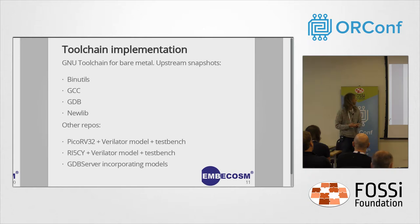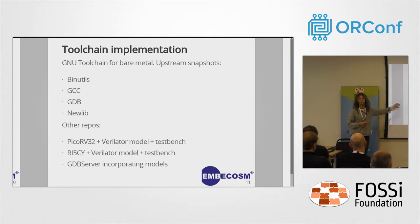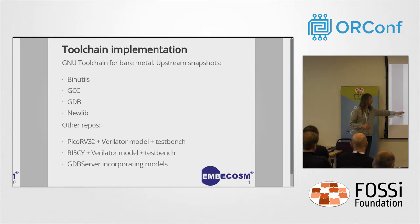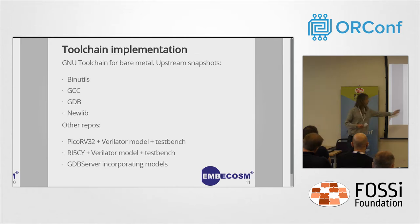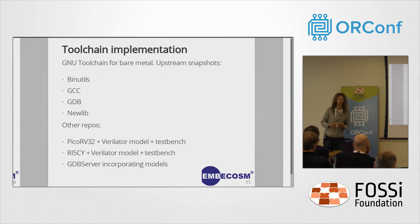The other repositories that make up our stack are the PicoRV32 repository, to which we added a Verilator model and a small test bench to verify the model was working as expected. We did the same for the RISC-V core — added a Verilator model and test bench. Then we wrote a GDB server that links into those Verilator models so we could instantiate the models and control them with GDB, load programs, run things, and inspect state as you normally would.